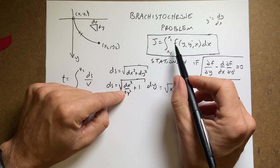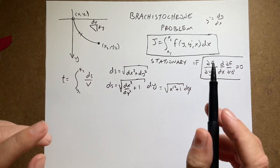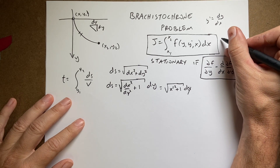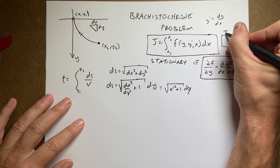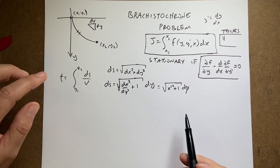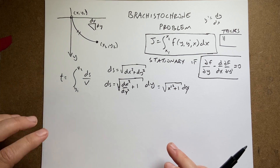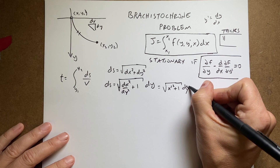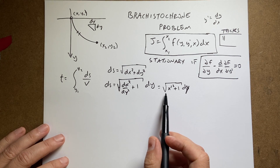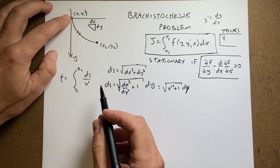Now, earlier I wrote this as a function of x — I'm switching this to y. That's trick number one: putting the positive y-axis going down. Trick number two is expressing everything in terms of y instead of x. So that's my ds.